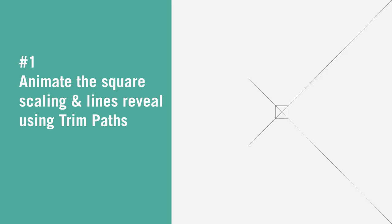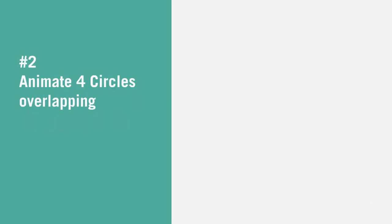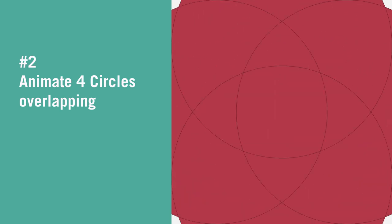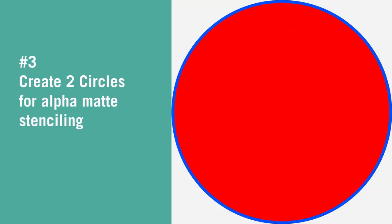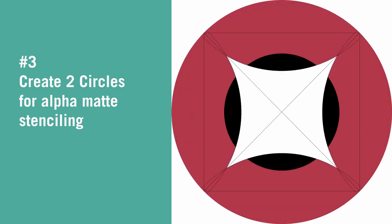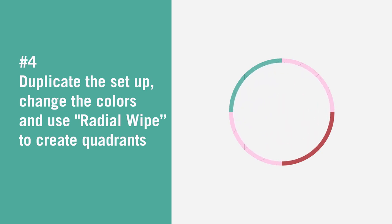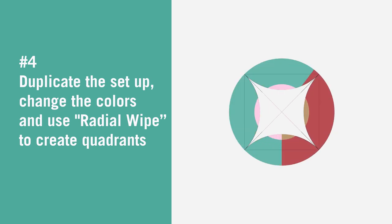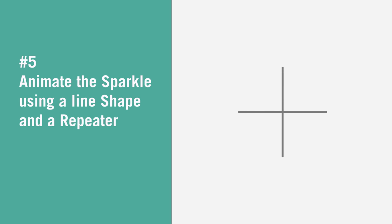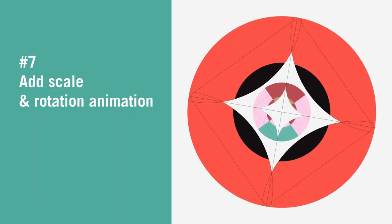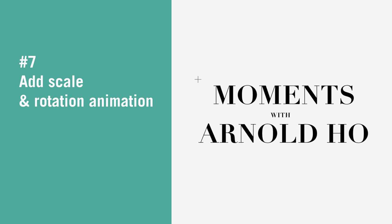First, we animate a square and two lines appearing in the scene. Then we have four circles animating off-screen, overlapping on-screen and off-screen again. Next, we create two circles as alpha matte using blending mode. We'll duplicate the previous setup, change the colors to create three more variants, and use Radio Wipe to create the quadrants. Next, we'll animate the sparkle using a line-shaped layer, and then duplicate the sparkles and position them around the text at random intervals. Finally, we put everything together with additional scale and rotation animation.